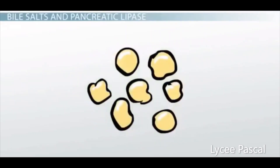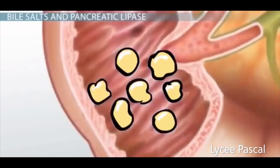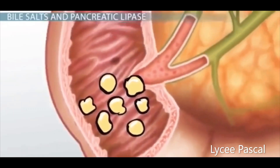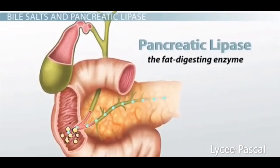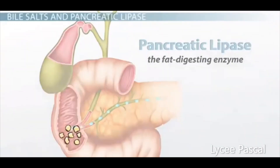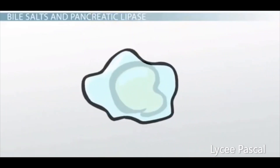The bile salts break up the fat to form much finer droplets. Then, pancreatic lipase acts on the lipid and breaks it down into fatty acids and glycerol — the two digestive products of lipids. These products are then absorbed by the small intestine.